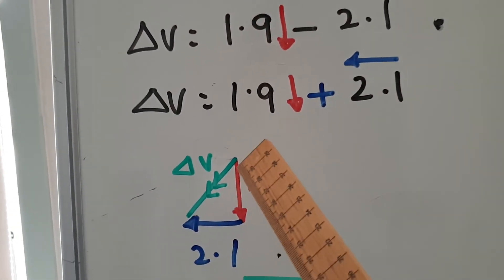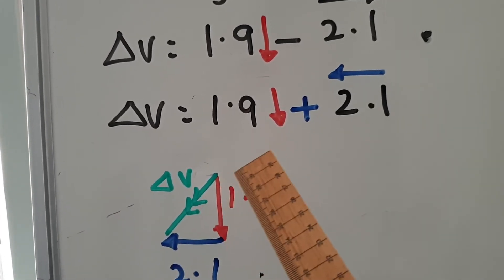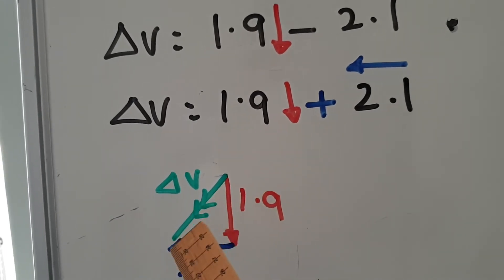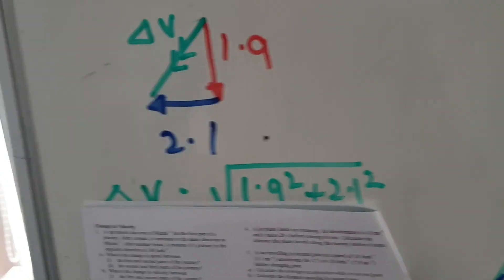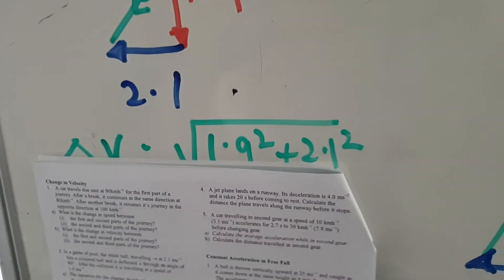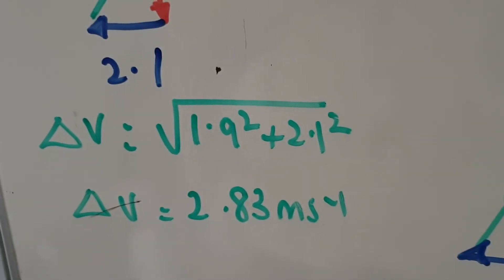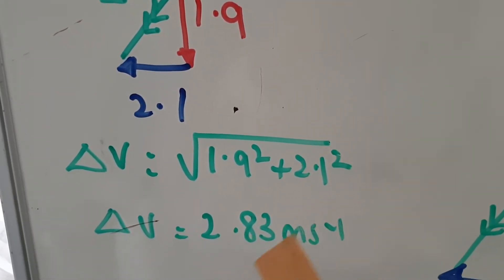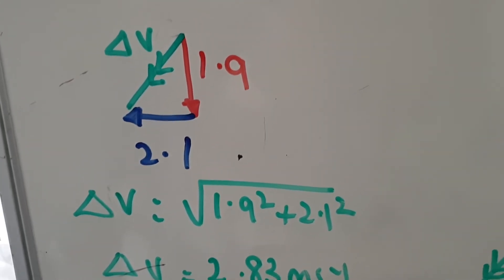That's your 1.9, that's your 2.1. And your change in velocity is from start to finish, so where the tails meet there. And then you just use Pythagoras. It's 1.9 squared plus 2.1 squared square root and you get 2.83.